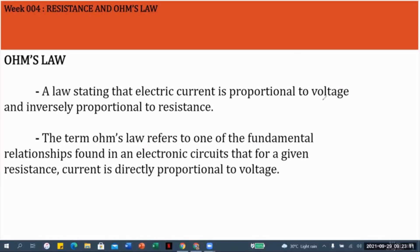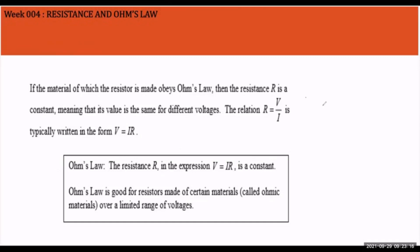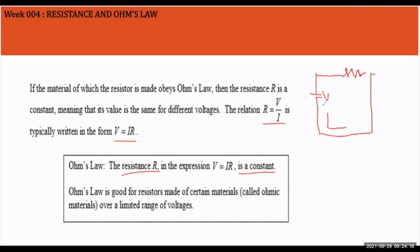If the material of which a resistor is made obeys Ohm's Law, then the resistance R is constant, meaning the value is the same for different voltages. The relation R = V/I is typically written as V = IR. This formula can be rewritten — in some books you'll see V = IR as Ohm's Law, and that is also the same expression. The resistance R in V = IR is a constant.